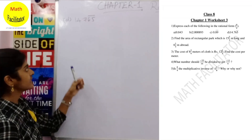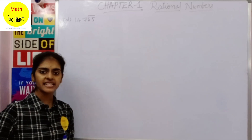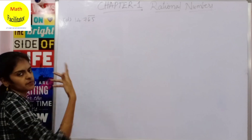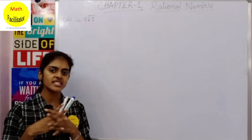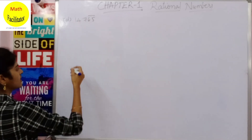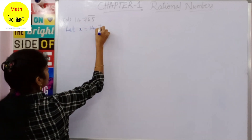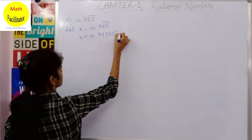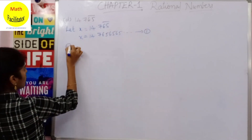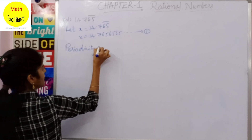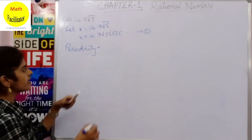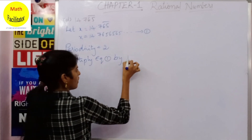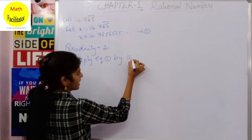The next part is 14.765̄, which is a non-terminating mixed recurring decimal. Here 7 is not repeating (no bar on 7), but 65 is repeating. So it is a mixed recurring decimal. Let x = 14.7656565… — equation 1. Periodicity is 2 (two digits repeating: 65), so multiply equation 1 by 100.